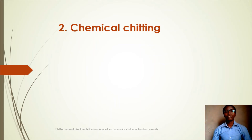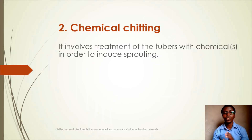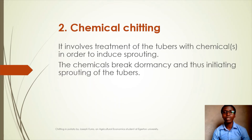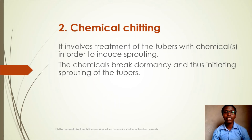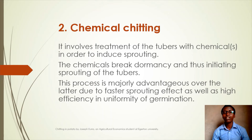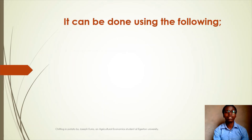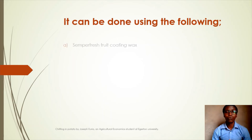Chemical chitting involves treatment of the tubers with chemicals in order to induce sprouting. The chemicals break dormancy and thus initiate sprouting of the tubers. This process is majorly advantageous over the cultural method due to faster sprouting effects as well as high efficiency and uniformity of germination.